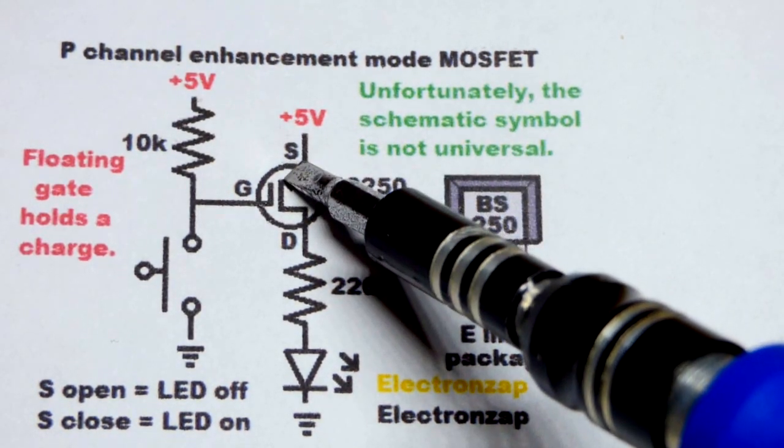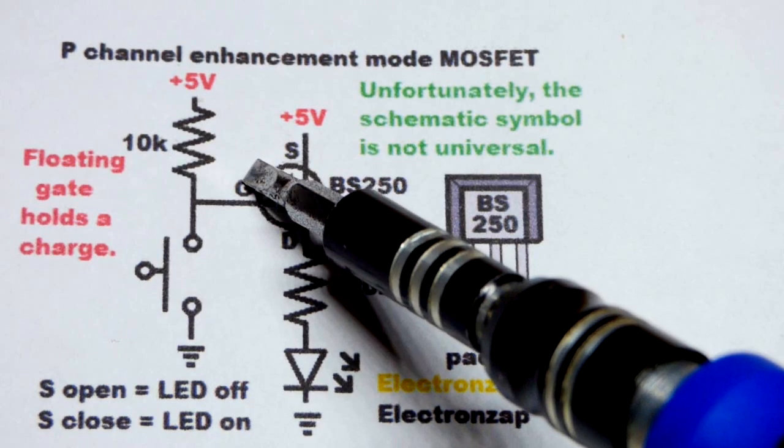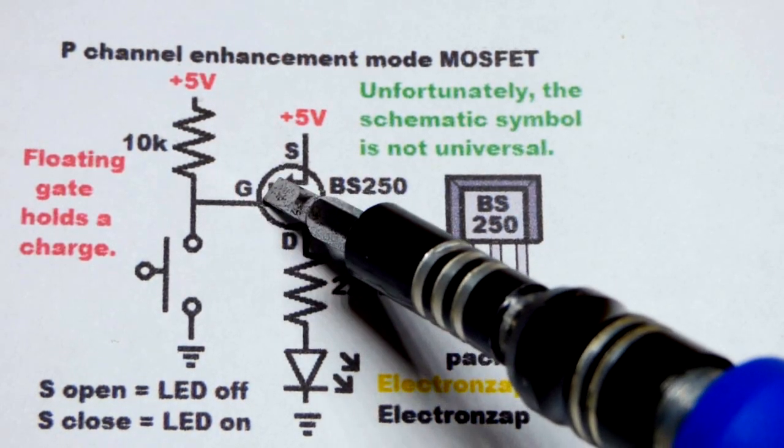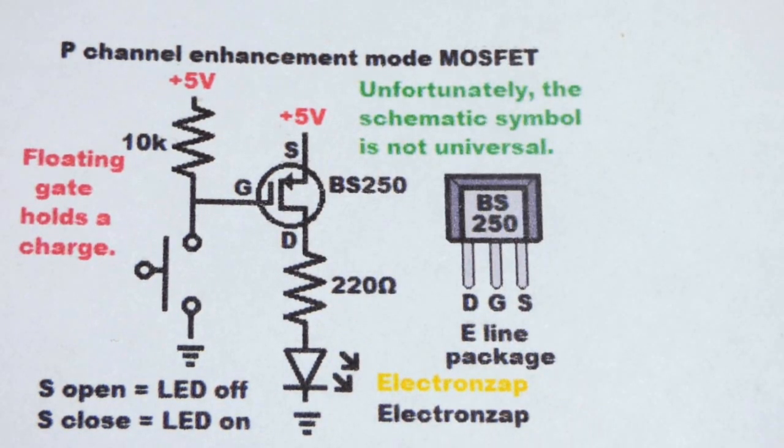But the source is the arrow side and the gate is the, you can think of this as a capacitor. So it's a little line on its own on that side of the transistor there.